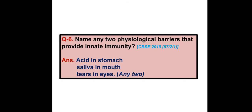Name any two physiological barriers that provide innate immunity. Answer: Acid secreted in the stomach, saliva in the mouth, and tears in the eyes are some of the physiological barriers that provide innate immunity.